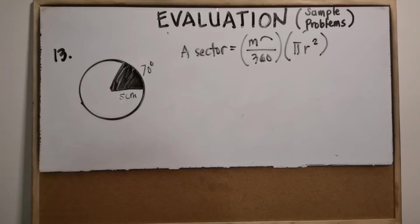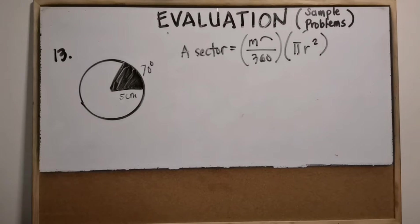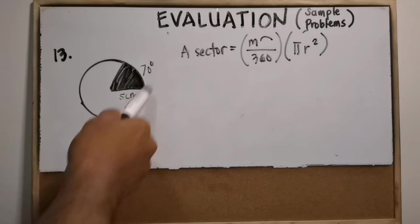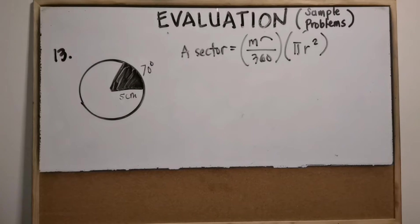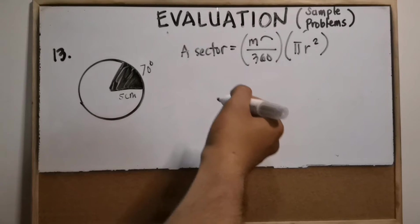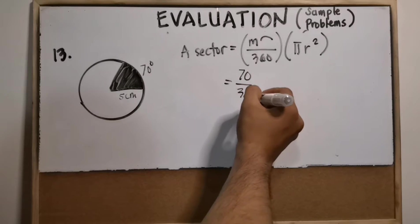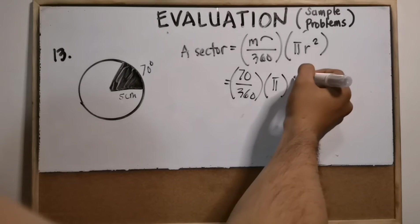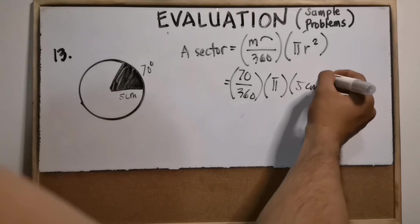Problem number 13 is similar to number 11, so we will use the same formula for the area of a sector. Let us solve the area of this sector if the measure of the arc is 70 degrees and the radius is 5 centimeters. Substituting: the area equals 70 over 360, times pi, times 5 centimeters squared.